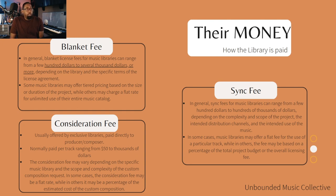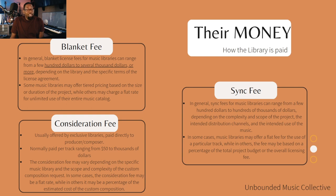Consideration fees are usually offered by exclusive libraries only and are paid directly to the producer or composer — that's you. Normally paid per track, ranging from fifty dollars to thousands of dollars. So if you submit an album's worth of music — say five to ten songs — you get paid for each one of those songs being considered for a particular project. That could be a lot of money. Even at fifty dollars for ten tracks, that's a nice chunk of change just for them considering your music. But if you don't know what a consideration fee is, you won't even know to ask.